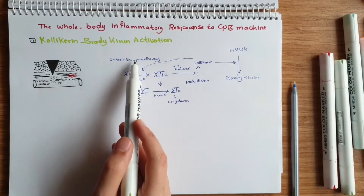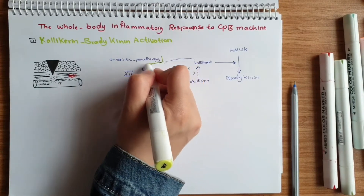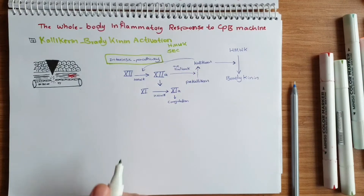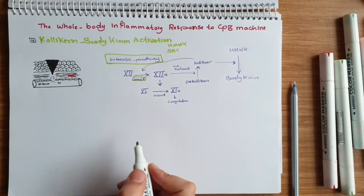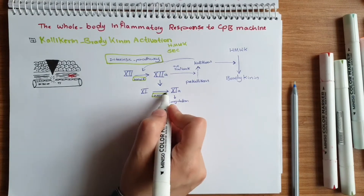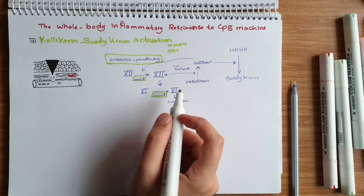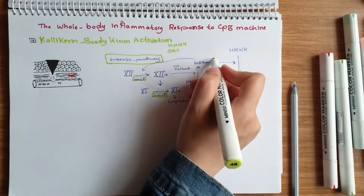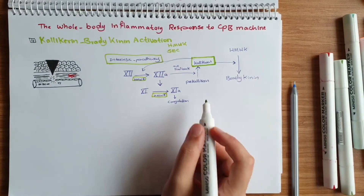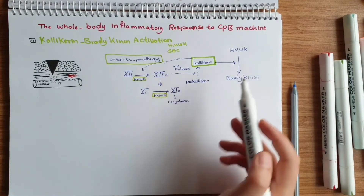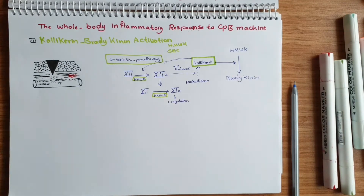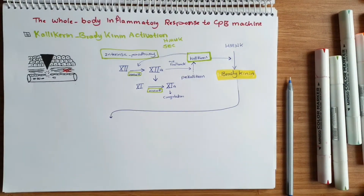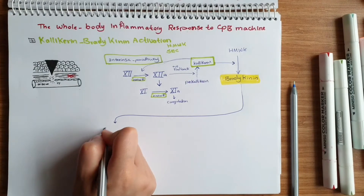Then we have kallikrein-bradykinin activation. The intrinsic pathway of the coagulation cascade is stimulated by high molecular weight kininogens and subendothelial cells. These high molecular weight kininogens activate factor 12 and factor 11, and the coagulation process proceeds. Active factor 12 has a positive feedback on prekallikrein, producing kallikrein, and this kallikrein helps the conversion of high molecular weight kininogen to bradykinin.